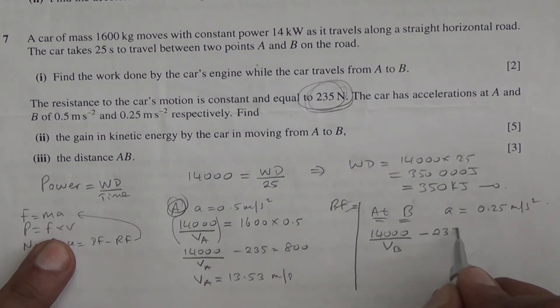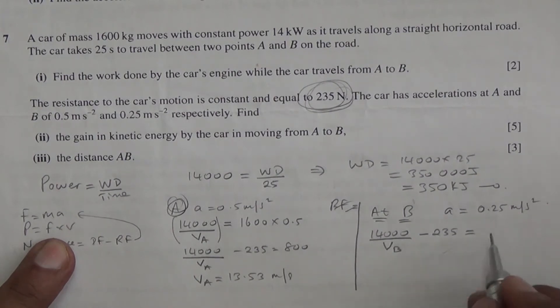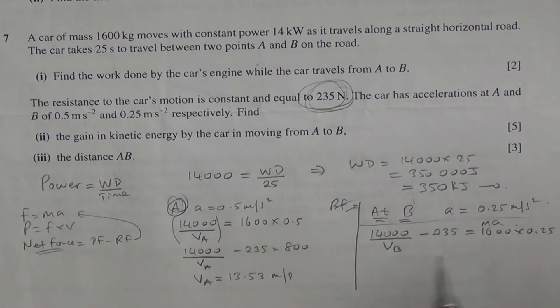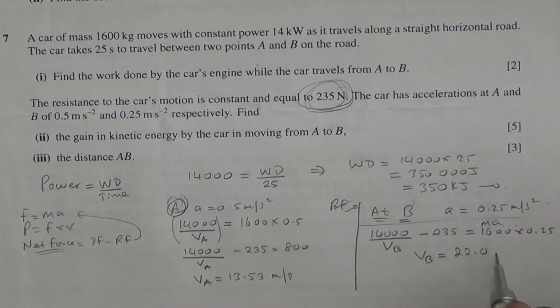Mass times acceleration. What is mass times acceleration? It is 1600 times 0.25. And if you solve that equation for VB, you're going to end up with VB as, put it in the calculator, 22.05 meters per second.